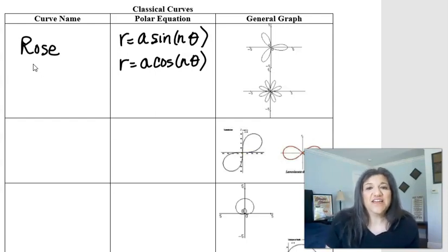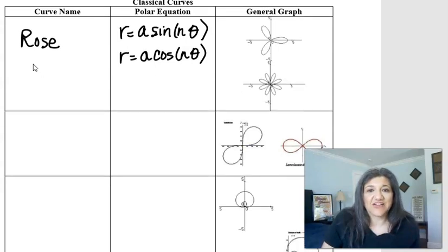But if you change them, you will see differences in symmetry, you will see the lengths of the petals change, and you will see the number of petals change. You should investigate the rose if you want to make a nice, cute little flower, and see what the a and n do to the actual curve.